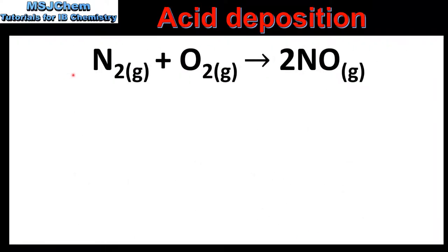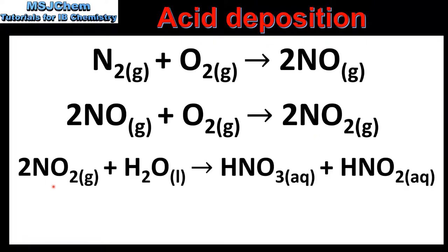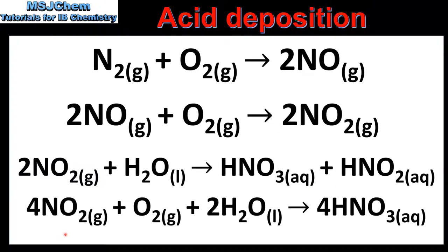Next we look at the oxides of nitrogen. In this equation we have the reaction between nitrogen gas and oxygen gas to form nitrogen monoxide. In the next equation we have the reaction between nitrogen monoxide and oxygen to form nitrogen dioxide. The nitrogen dioxide then goes on to react with water to form two acids: HNO₃, which is nitric acid, and HNO₂, which is nitrous acid. Alternatively, the nitrogen dioxide can react with oxygen and water to form nitric acid.